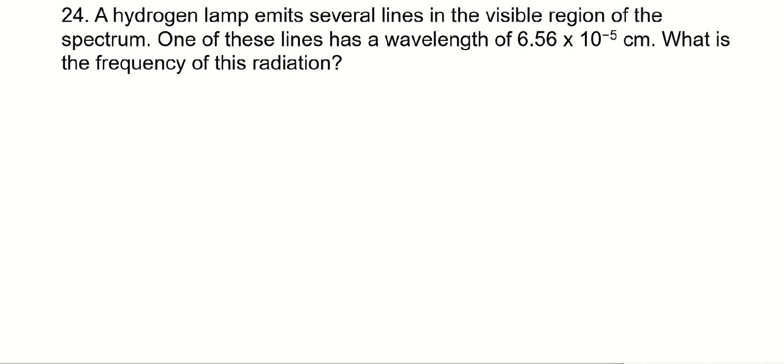A hydrogen lamp emits several lines in the visible region of the spectrum. One of these lines has a wavelength of 6.56 times 10 to the negative 5 centimeters.